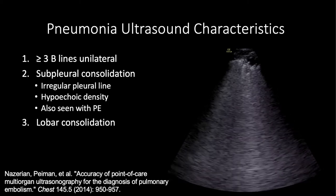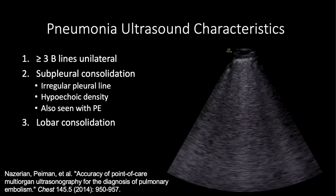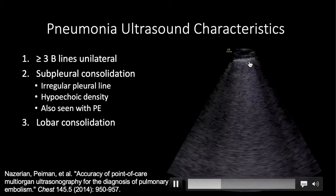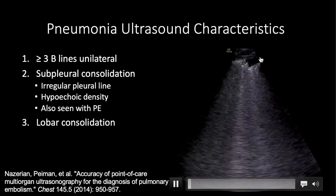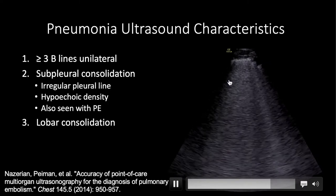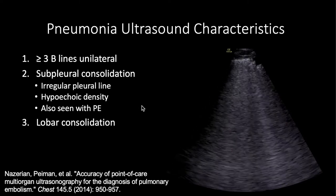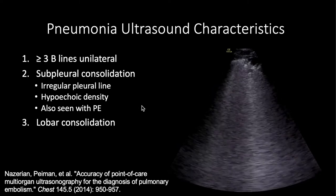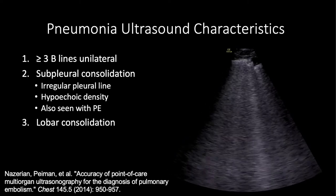You can also see some subpleural consolidations with pulmonary embolisms, because this could be a subpleural infarction — which is why patients have pleuritic chest pain with PE. So anytime you see a subpleural consolidation, think pneumonia or PE, and then integrate into the clinical context: the patient's other symptoms, physical exam, labs, etc.